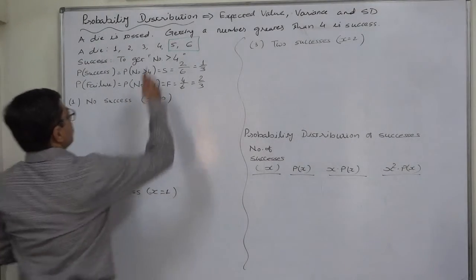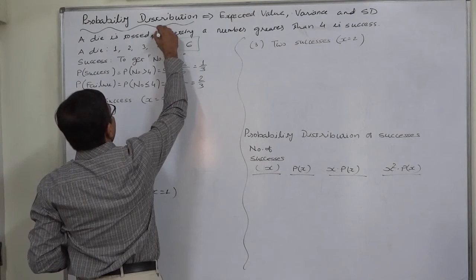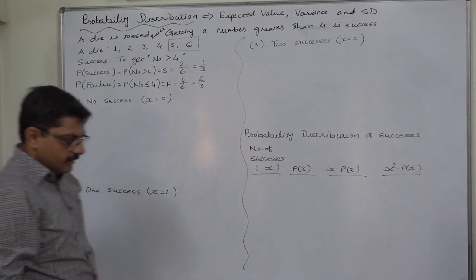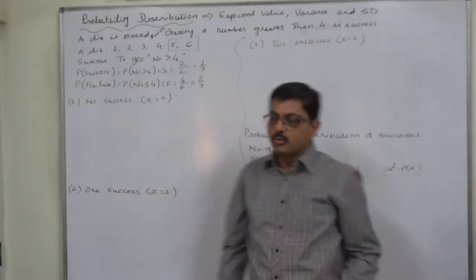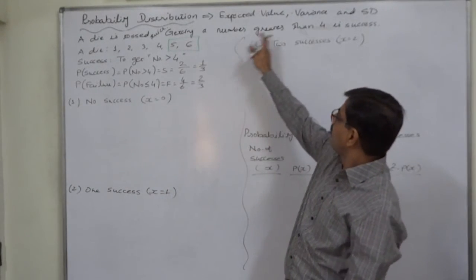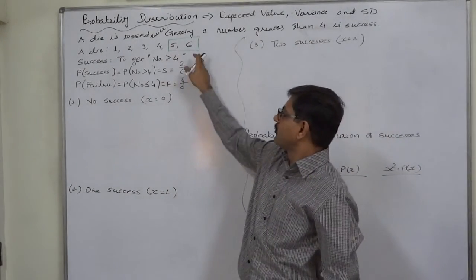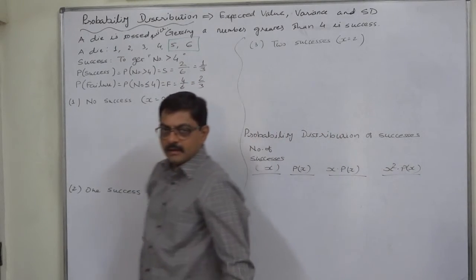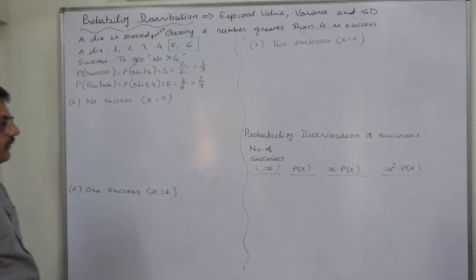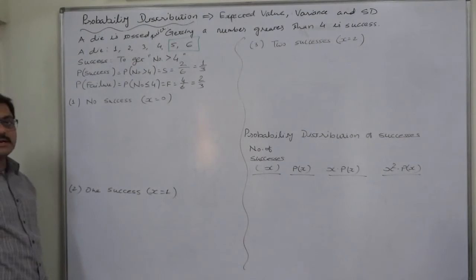When a die is tossed two times, that means there are two trials. Getting a number greater than 4, that is 5 or 6, is success. So if a die is tossed twice, that means there are two trials.